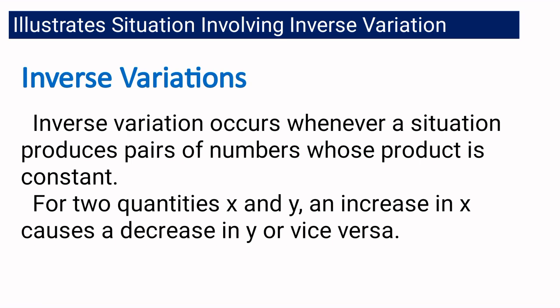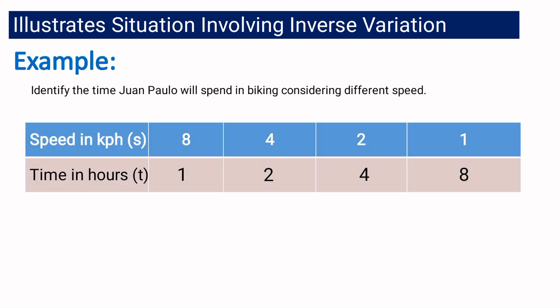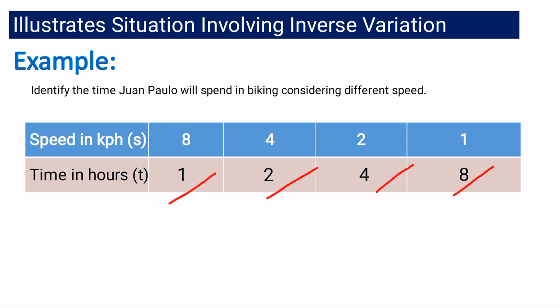According to the definition, in inverse variation, if X increases, Y will decrease and vice versa. If we look at Paolo's speed — 8, 4, 2, and 1 — you will notice that the variable decreases. On the other hand, if we look at the time — 1, 2, 4, and 8 — you will notice that the values increase. So as the speed decreases, the time will increase.